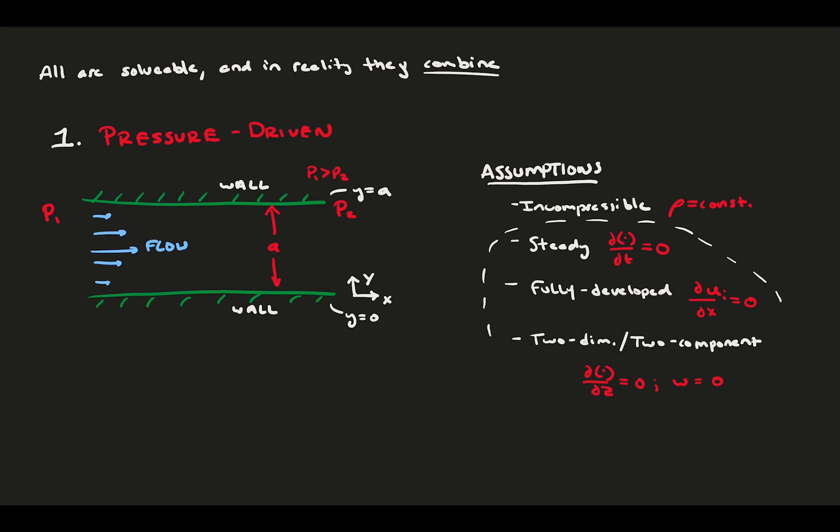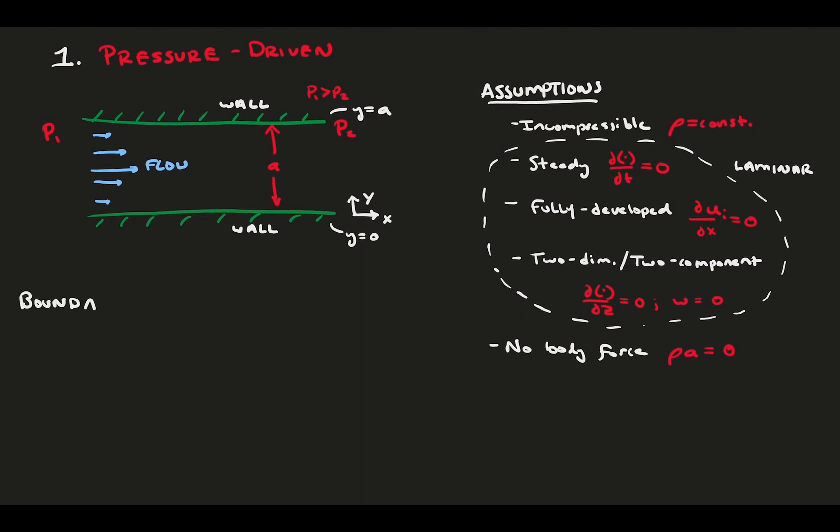These last three assumptions, steady, fully developed, and 2D2C, are general characteristics that require laminar flow. In a few videos, we'll cover the difference between laminar and turbulent flow, and how when flow is turbulent, we can't make these assumptions and life gets pretty difficult. And last but not least, there's no body force in our problem to be found.